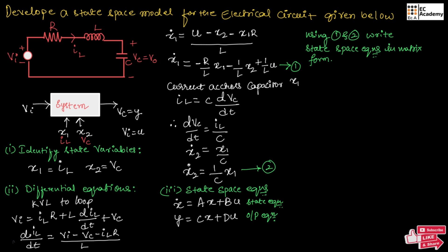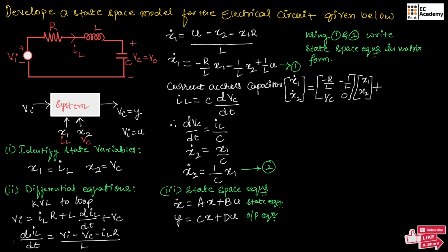We can write the matrix for A. In equation 1, the X1 term is −R/L and the X2 term is −1/L, so we write [−R/L, −1/L] for the first row. In equation 2, the X1 term is 1/C and there is no X2 term, so we write [1/C, 0] for the second row, multiplied by [X1; X2]. For matrix B with respect to U: in equation 1 the coefficient of U is 1/L, and in equation 2 there is no U term, so we write [1/L; 0] multiplied by U. This is the matrix for the state equation.